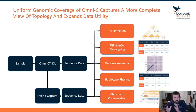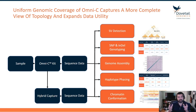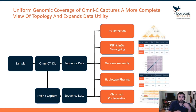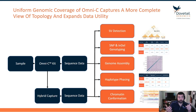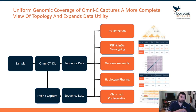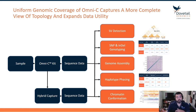Going into more depth on each product: for Omni-C, that uniform coverage captures a more complete view of topology and expands data utility. You take your sample — tissue, blood, or cell material — perform the Omni-C assay, sequence the data, and from there you can do structural variant detection, SNP and indel genotyping because we're getting whole-genome sequencing coverage, and then you can use that information to reassemble genomes — very powerful if you have cancerous genomes and want to build your own reference.